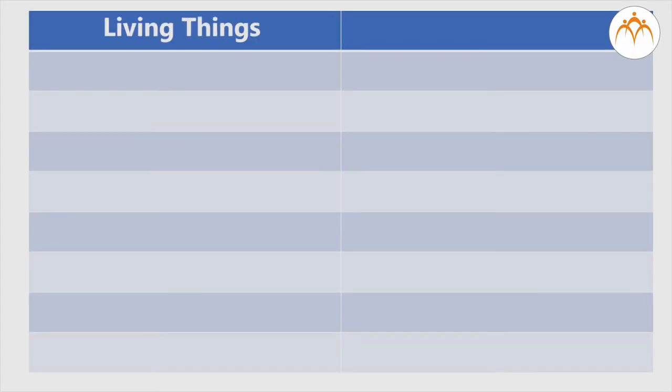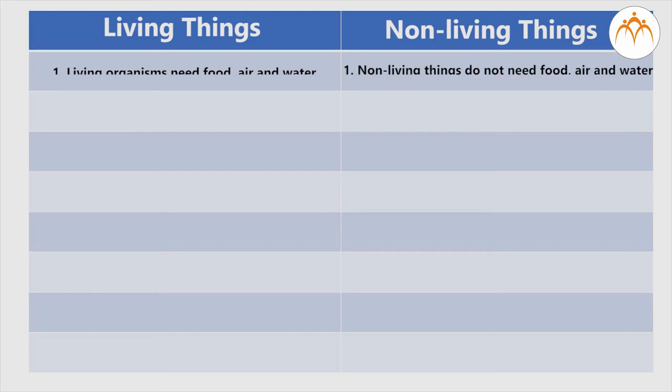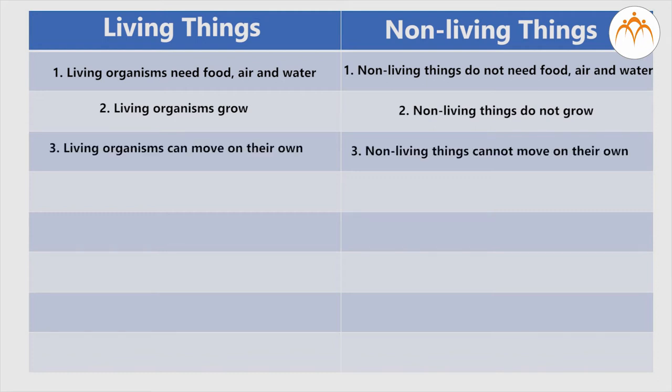Living organisms need food, air and water. Non-living things do not need food, air and water. Living organisms grow. Non-living things do not grow. Living organisms can move on their own. Non-living things cannot move on their own.